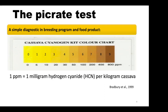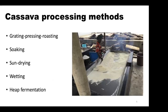Cassava is categorized into two types: sweet cassava and bitter cassava. Sweet and bitter cassava are also seen as those having low cyanide and high cyanide, respectively. To consume cassava, especially in sub-Saharan Africa, there are a couple of traditional methods to reduce cyanide in bitter cassava to a level that is safe for consumption.